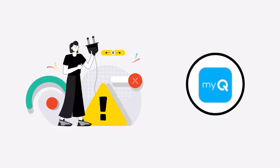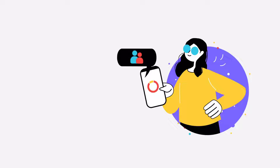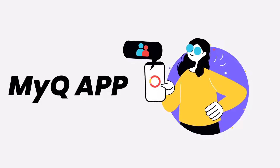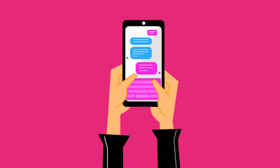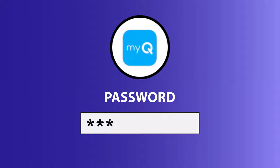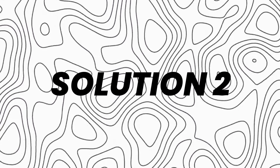It might be possible that you're not able to log into the MyQ Garage app due to a connectivity issue. First of all, you need to make sure you have a strong and stable internet connection. Do a quick test by opening an app that runs on internet other than the MyQ Garage app and check if it's working. You can also try switching from Wi-Fi to mobile data and vice versa — doing this might help you log into your MyQ Garage mobile app.